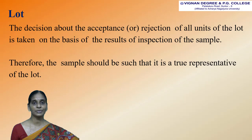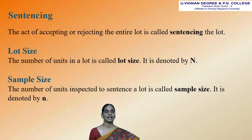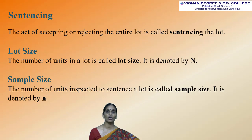Therefore, the sample should be such that it is a true representative of the lot. The next term is sentencing. The act of accepting or rejecting the entire lot is called sentencing the lot.